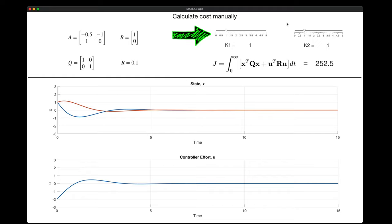For example, here I have K1 and K2 both equal to 1, and then the app simulates the closed loop system with these gains, which produces a plot of the system state over time and a plot of the controller effort that produced that state. And then it plugs this information into the cost function and then manually calculates what the cost is. And so with these gains, it produces a cost of about 252.